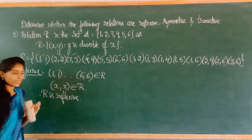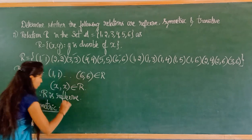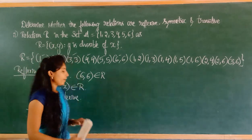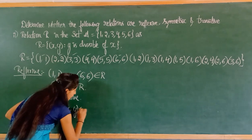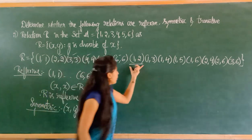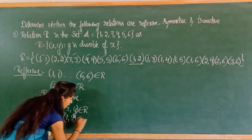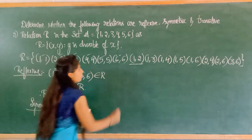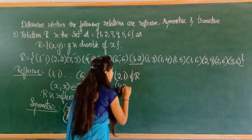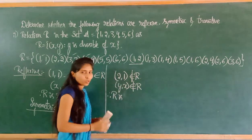Next, we check for symmetric. For symmetric, if (x, y) belongs to R, then (y, x) should also belong to R. Suppose I take (1, 2) — it belongs to R. But (2, 1) is not in the given relation. So (1, 2) belongs to R but (2, 1) does not belong to R. Therefore, (y, x) does not belong to R, and R is not symmetric.